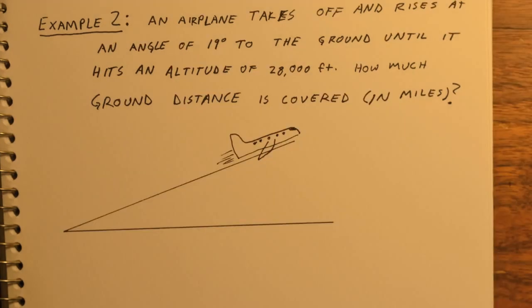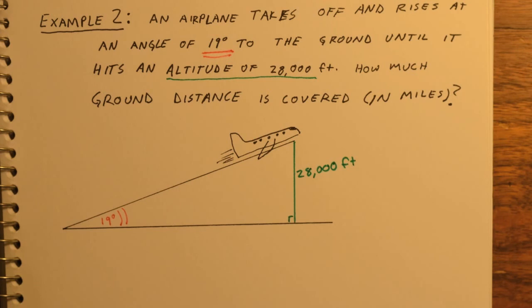We have an airplane taking off. The angle that it rises is a constant angle of 19 degrees, so the angle of elevation is 19 degrees. It continues rising until it hits an altitude of 28,000 feet. Remember, altitude is always distance from a certain height straight down to the ground. We want to find how much ground distance is covered, which would be that horizontal line.